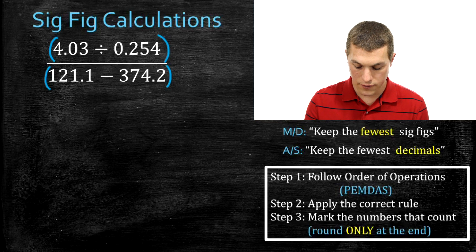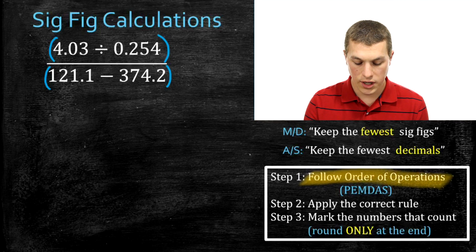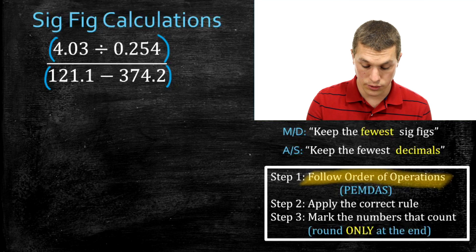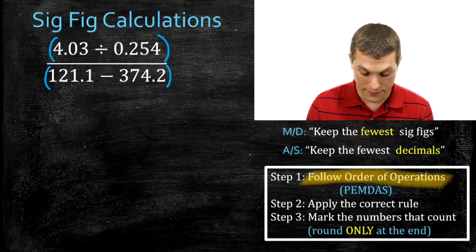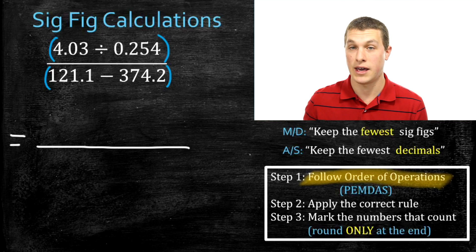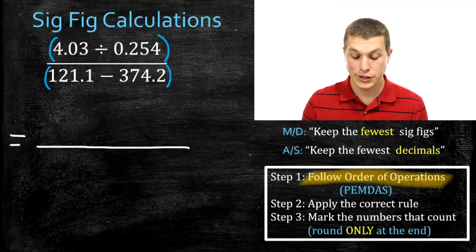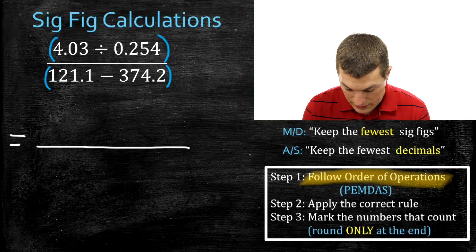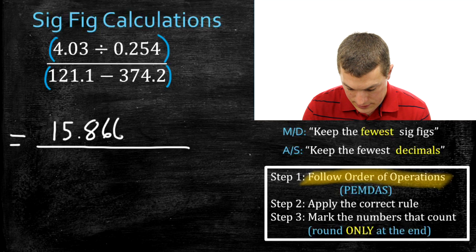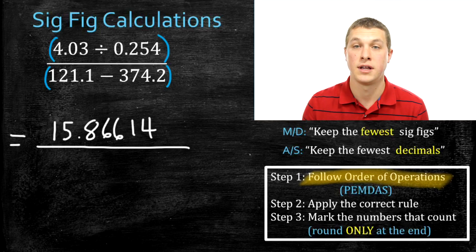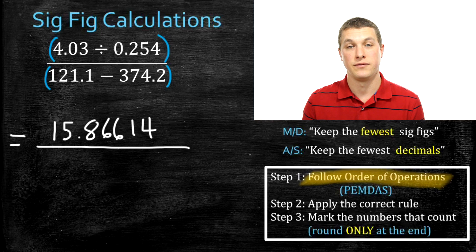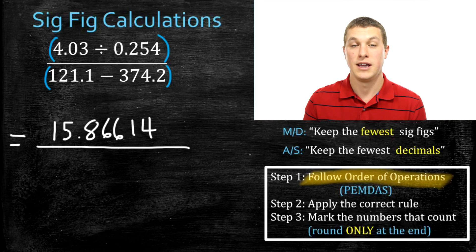So when we go to step one — follow order of operations — we need to do those things in parentheses first, which means we resolve what's on top and what's on the bottom. I'll resolve the top part first. When I do 4.03 divided by .254 in my calculator, that gives me 15.86614 with even more digits. I'll keep all those digits in my calculator to avoid round-off error.